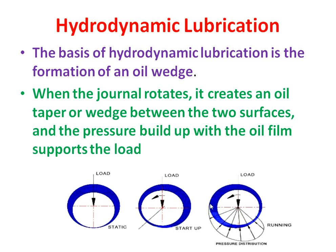Due to the build-up of pressure in this oil wedge, that pressure supports the load and separates the direct contact between the shaft and journal — that is, between the two moving parts. This built-up pressure supports and takes the whole load and avoids direct metal-to-metal contact. So this is the working principle of hydrodynamic lubrication: it works on the formation of an oil wedge, which is an oil film of decreasing thickness and increasing pressure.